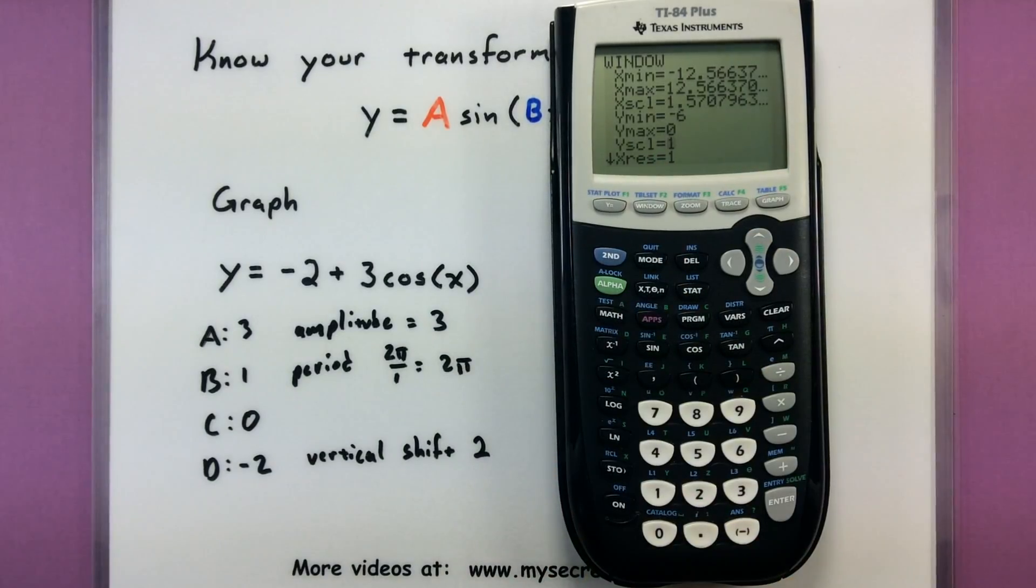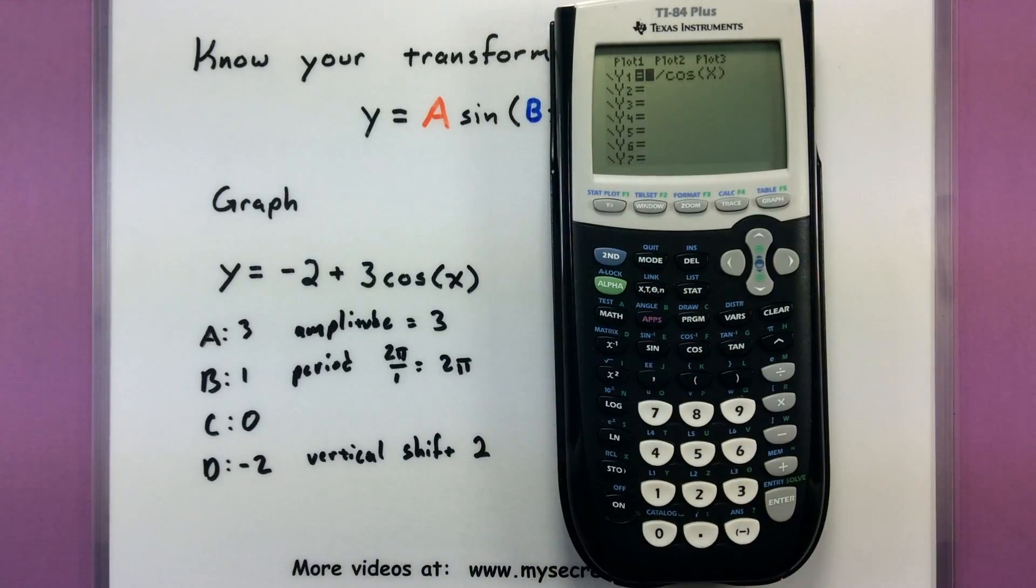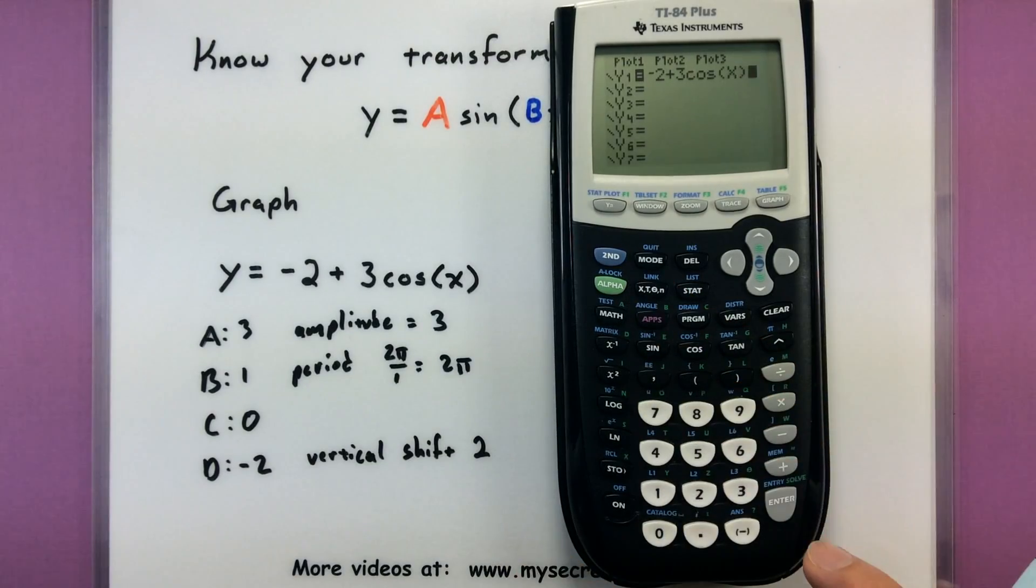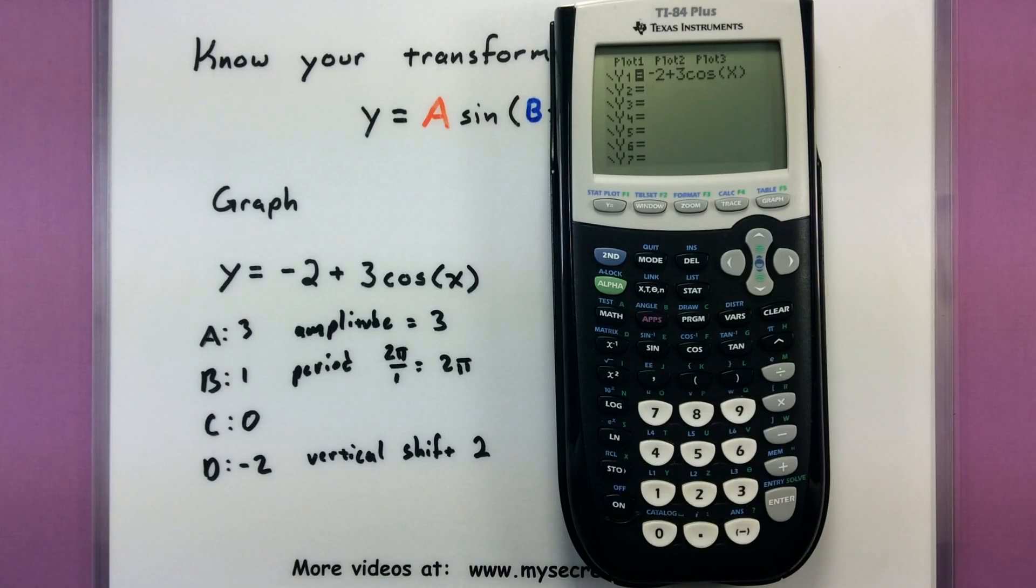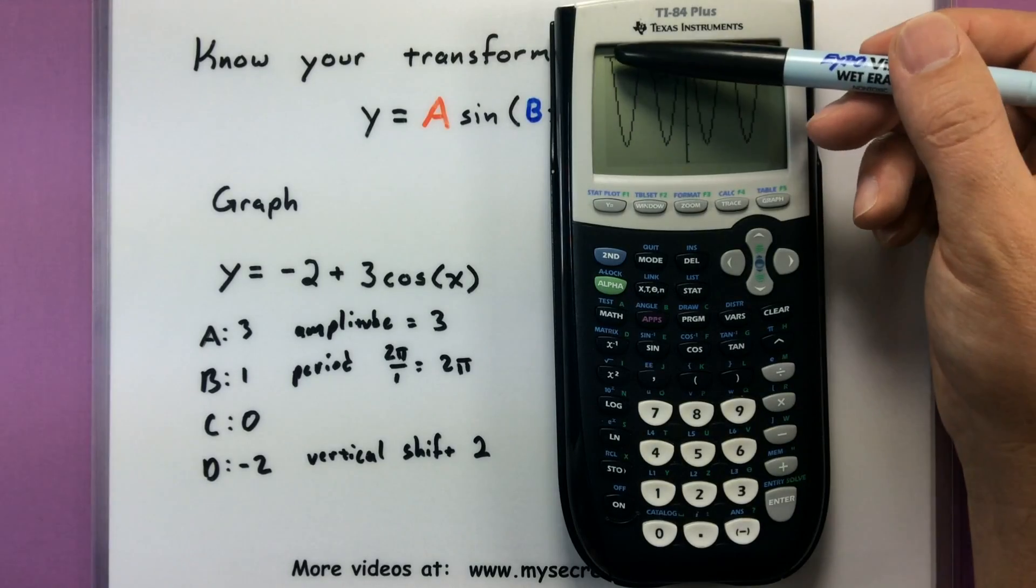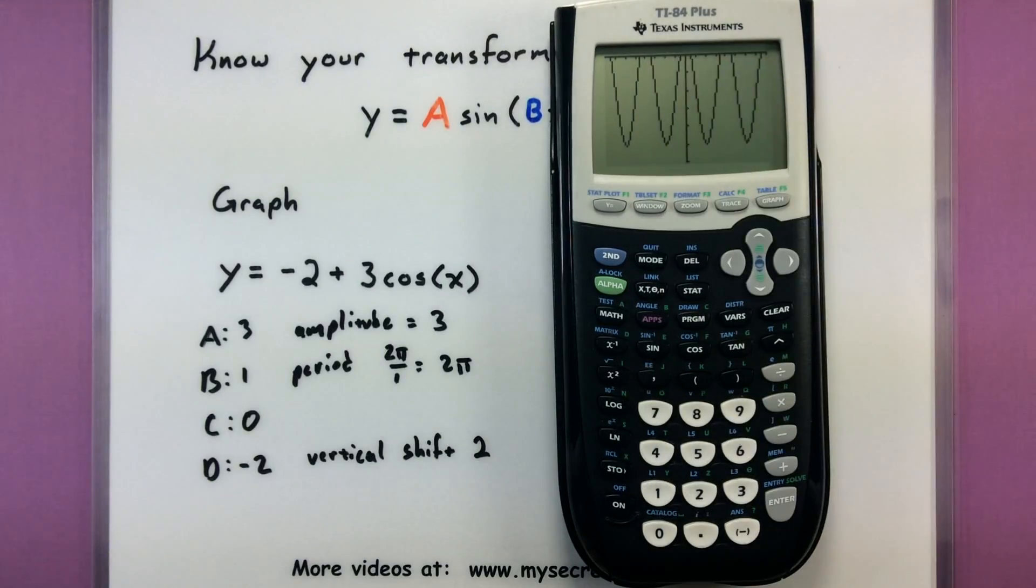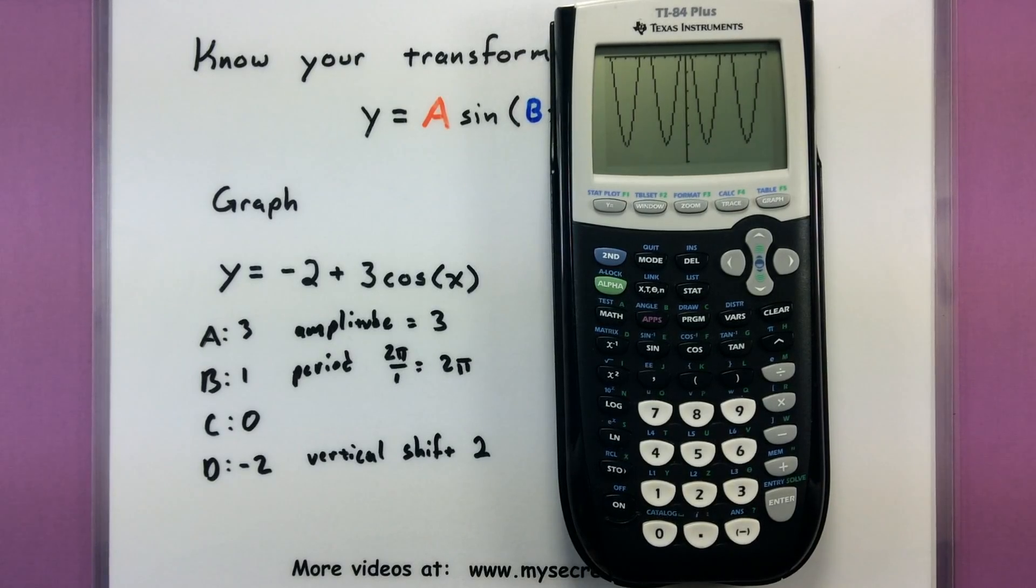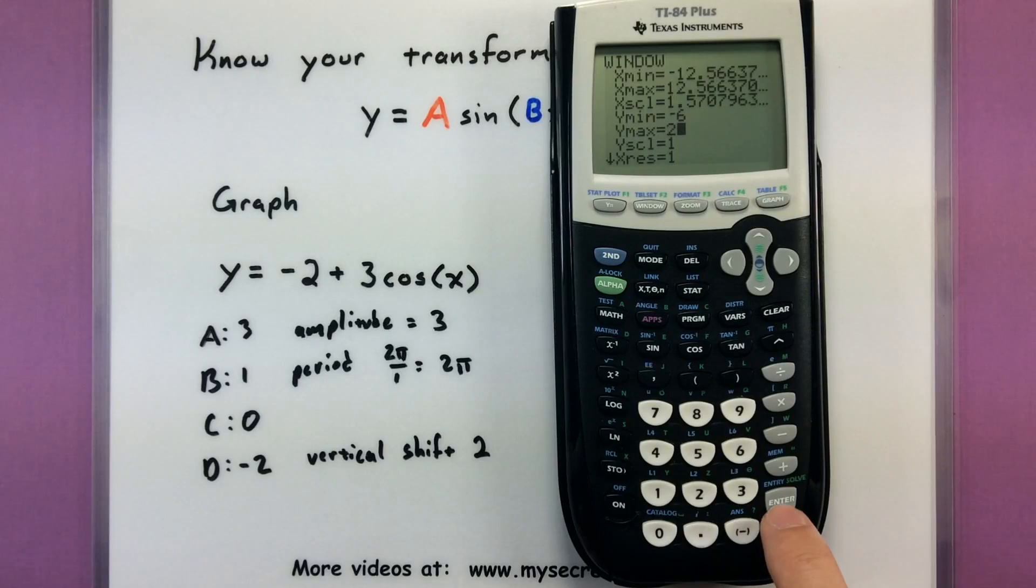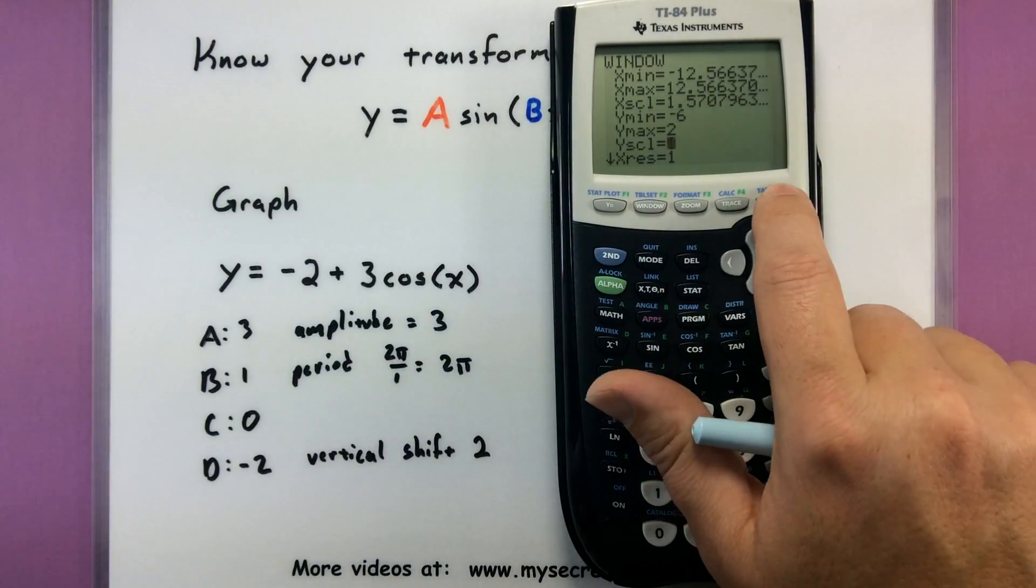And for our y, this is where we're really going to have to do some adjustments because the waves are bigger, it has a larger amplitude, and the whole thing has been shifted down. So let's set our y minimum to be negative 6 and let's go ahead and set the y at 0. By doing a little bit of work of setting that up, now we can go into our y equals. Let's clear this whole one out and put in our function, negative 2 plus 3 cosine of x. I think we have everything set. Let's go ahead and take a look at the graph.